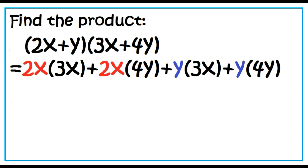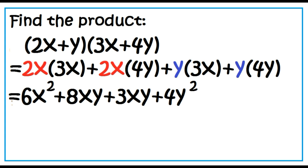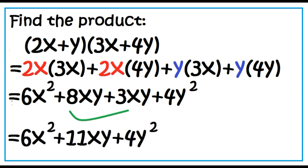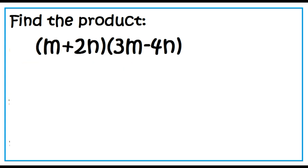Inner: y times 3x. Last: y times 4y. This gives: 6x squared plus 8xy plus 3xy plus 4y squared. Combining 8xy and 3xy gives 11xy. The answer is 6x squared plus 11xy plus 4y squared.